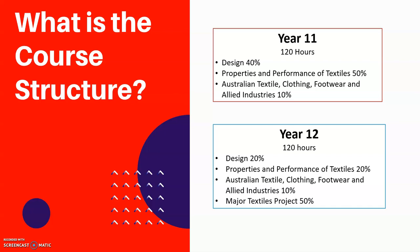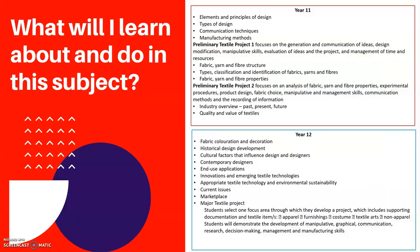The last topic in Year 11 is the Australian Textile, Clothing, Footwear and Allied Industry, where we look at what it takes to be a textiles business in Australia and what businesses are out there. In Year 12, we look at design and properties and performance of textiles again, with a focus on your actual assignment as well. With design, we look at contemporary, cultural, and historical designs. We also look at the Australian textiles industry again, and 50% of your time in school is spent on your major textile project.